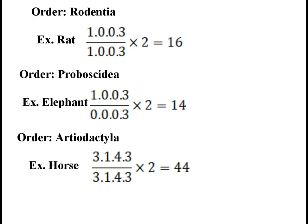In order Rodentia, for example rat: it has 1 incisor, canine is absent, premolars are absent and 3 molars in one half of the upper jaw, and similarly in the lower jaw. Multiplying by 2 gives a total of 16 teeth. In order Proboscidea, for example elephant: 1 incisor, canine absent, premolars absent and 3 molars in one half of each jaw, giving a total of 14 teeth.